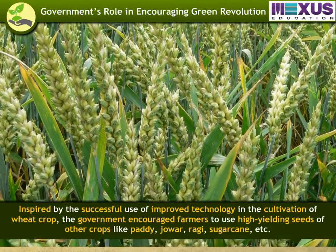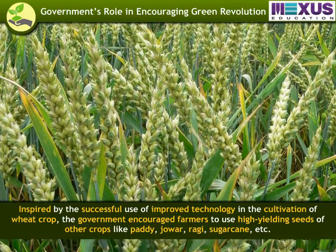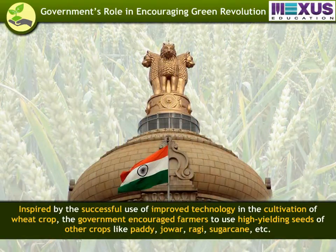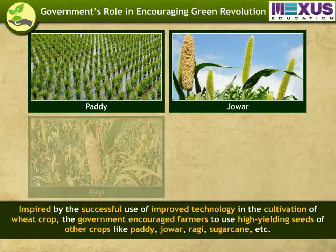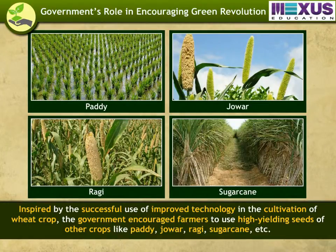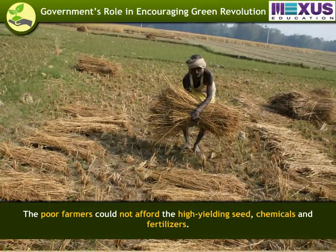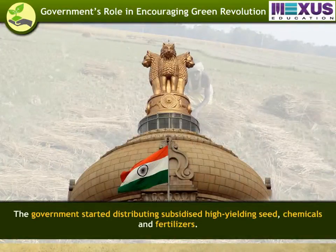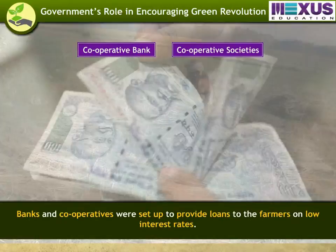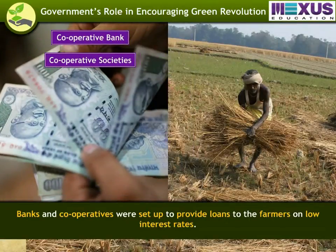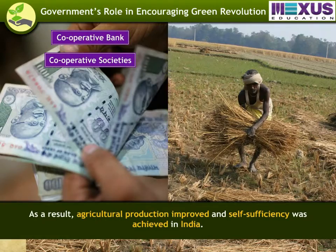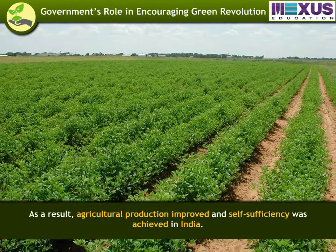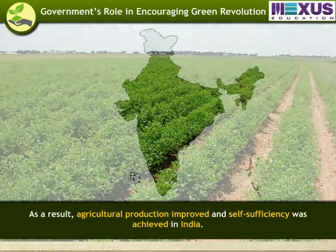Inspired by the successful use of improved technology in the cultivation of wheat crop, the government encouraged farmers to use high-yielding seeds of other crops like paddy, jowar, ragi, sugarcane, etc. Since poor farmers could not afford the high-yielding seeds, chemicals, and fertilizers, the government started distributing them at subsidized rates. Banks and cooperatives were set up to provide loans to farmers at low interest rates. As a result, agricultural production improved and self-sufficiency was gradually achieved in India.